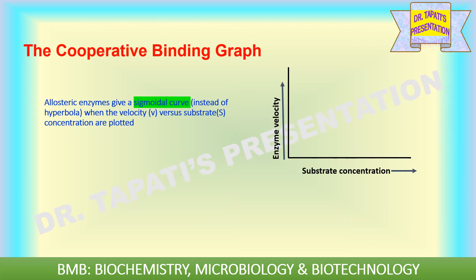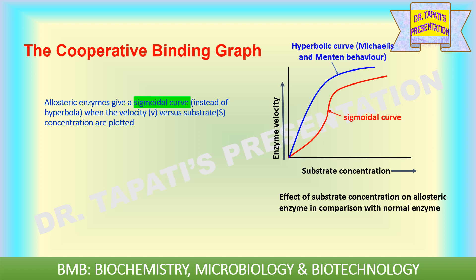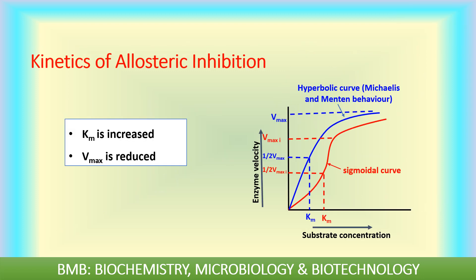The activity of an enzyme showing cooperative behavior can be graphed against the concentration of the substrate. This graph shows a rapid increase in speed — a sigmoidal curve is obtained instead of the Michaelis-Menten curve, which is a rectangular hyperbola. So in the case of allosteric enzymes, a sigmoidal curve is observed. When an inhibitor binds to the allosteric site, the configuration of the catalytic site is changed so that the substrate cannot bind properly. Therefore, Km is increased whereas Vmax is reduced in the case of allosteric inhibition.